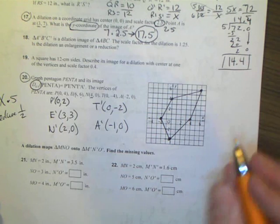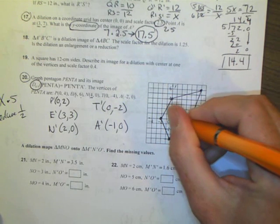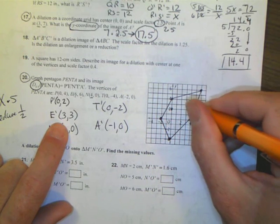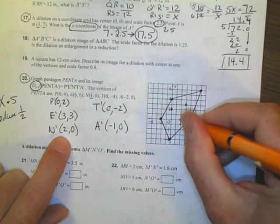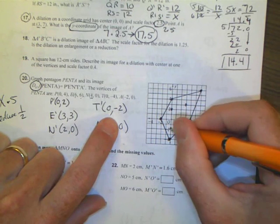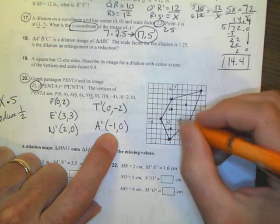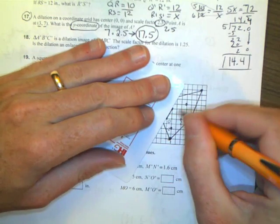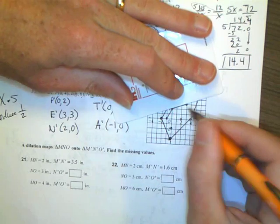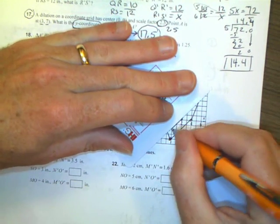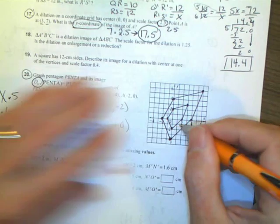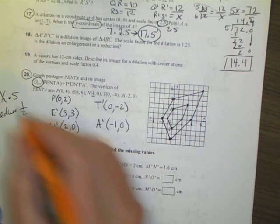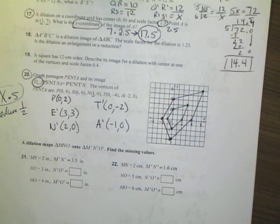Then I want you to graph that. P prime is (0, 2), E prime is at (3, 3), N is at (2, 0), T is at (0, -2), and A prime is at (-1, 0). So if I graph that out, what I have looks like this. I can see it's the same image or similar image and it's been reduced down by half or by 0.5. And that was your lesson. Thanks.